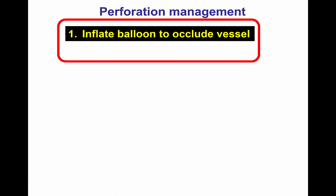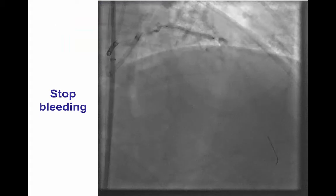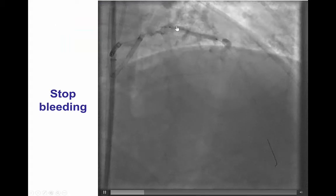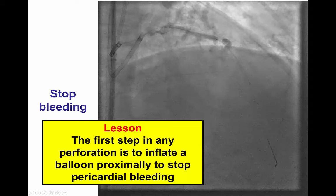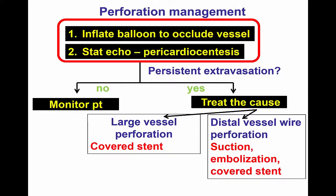Once the perforation is found, the very first step for any kind of perforation is to inflate a balloon so that the vessel is occluded and the risk of tamponade goes down. That's exactly what was done in this case. A balloon was advanced over the guide wire, inflated proximal to the perforation, and there is no ongoing extravasation in the pericardium. Standard approach for every perforation: balloon is inflated so that pericardial bleeding is stopped.